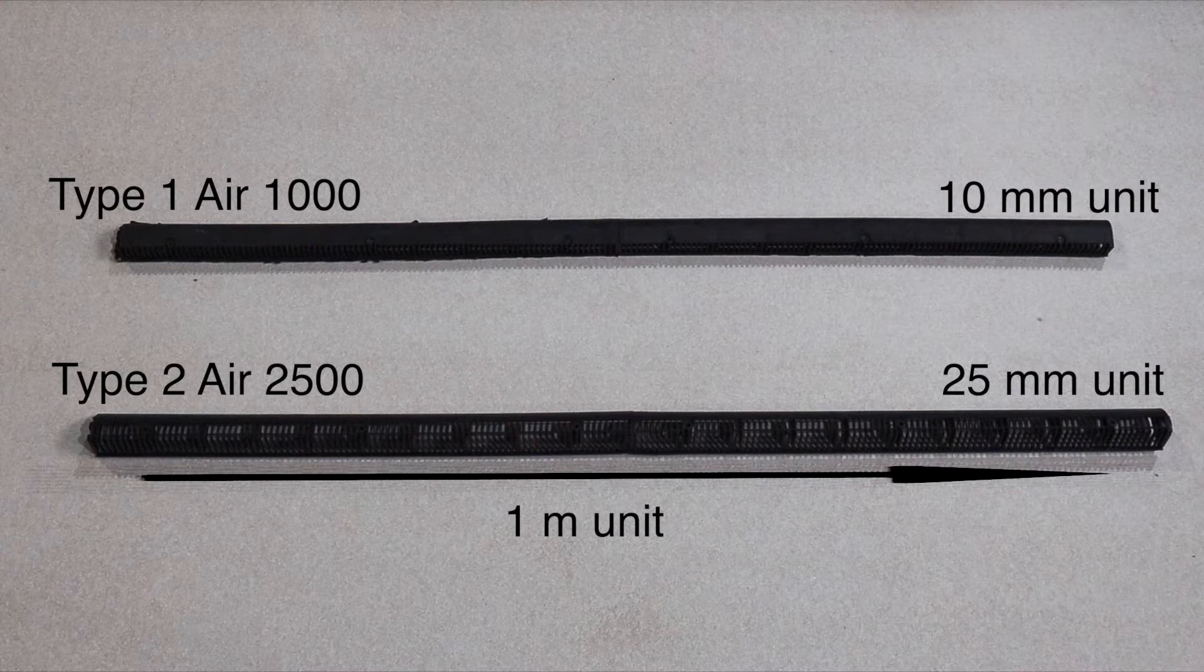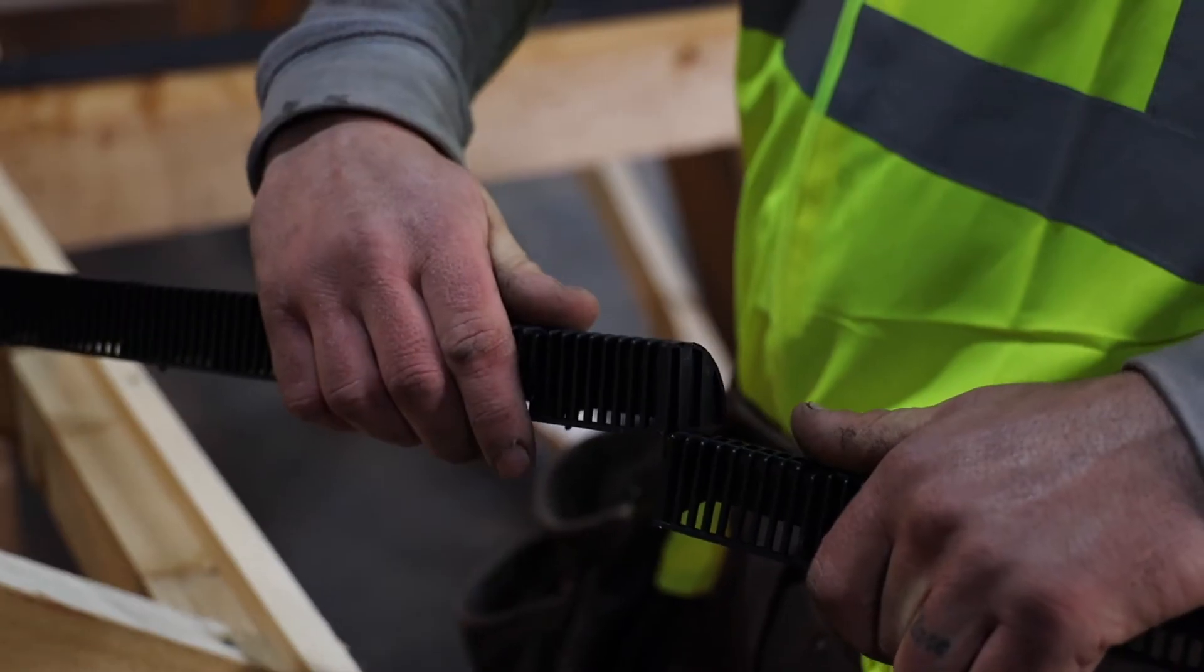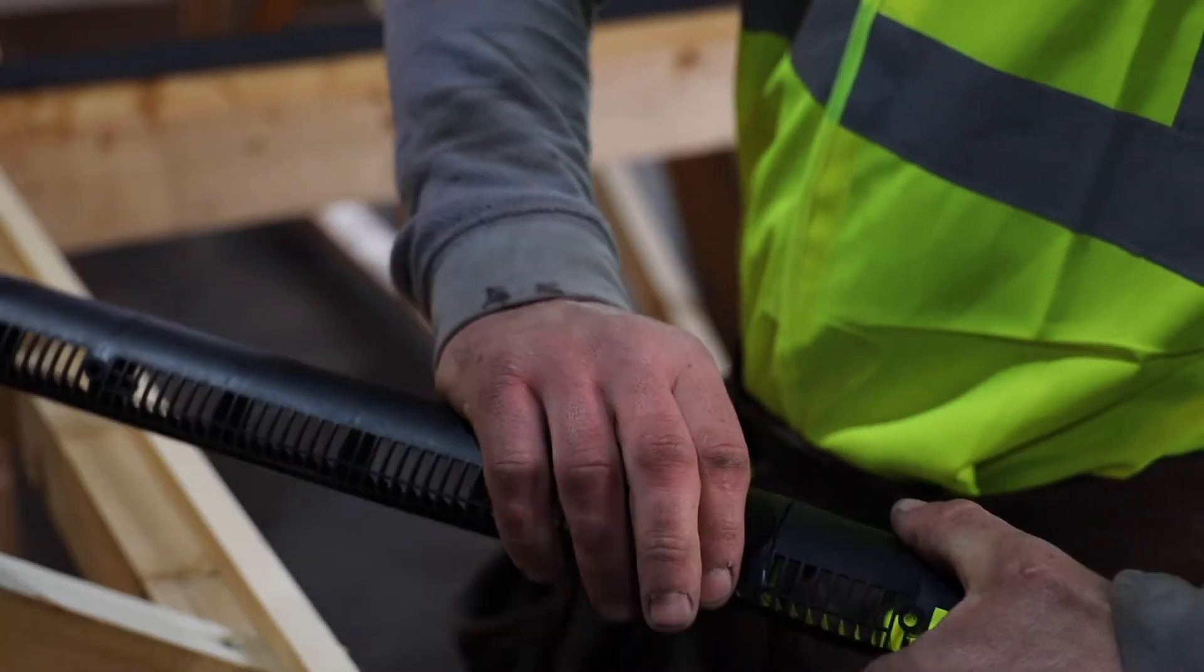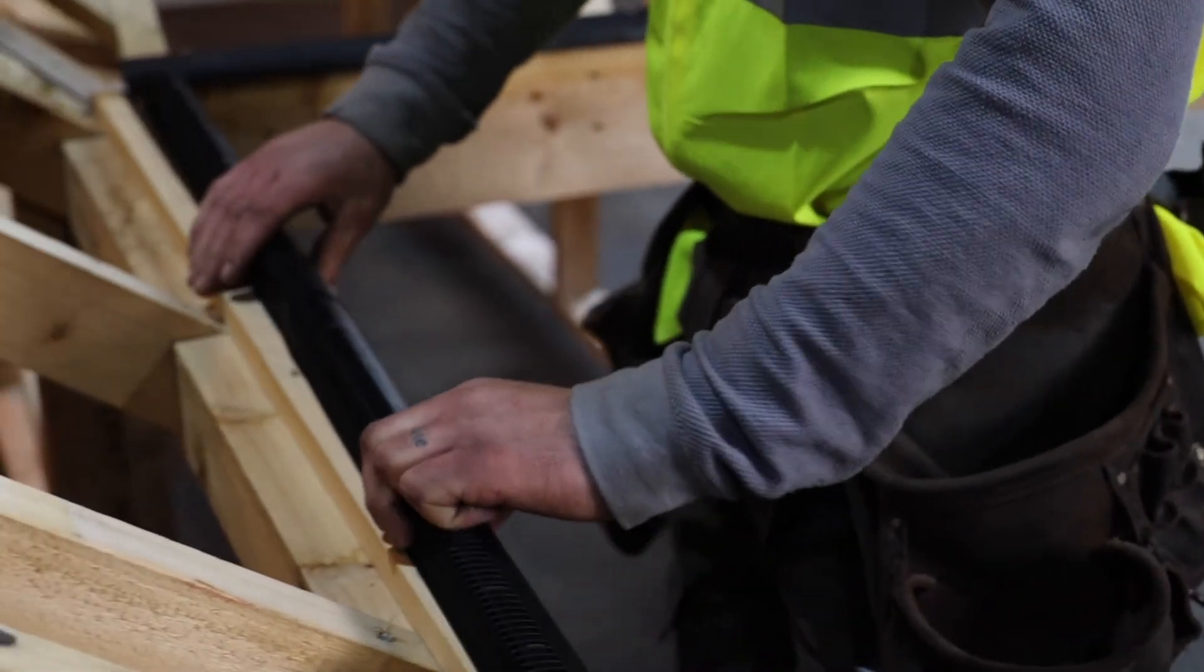The second type, Air 2500, is a 25mm unit which will provide 25,000 mm² of airflow per linear meter. It is normally used where a ventilation of 25mm continuous opening is required.